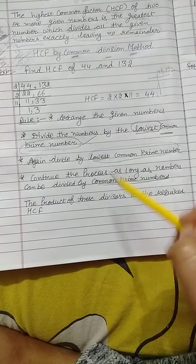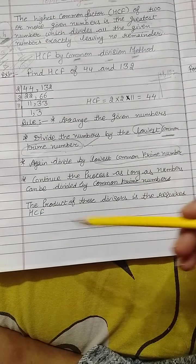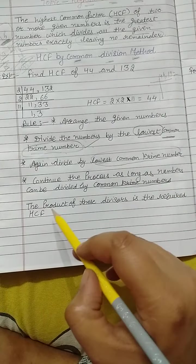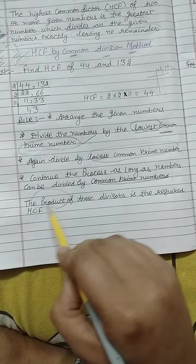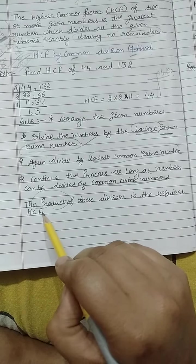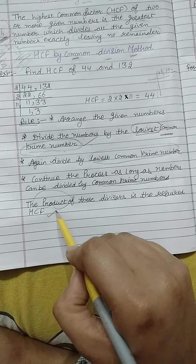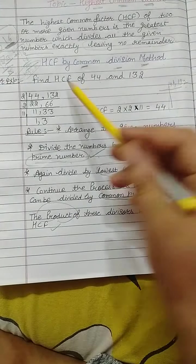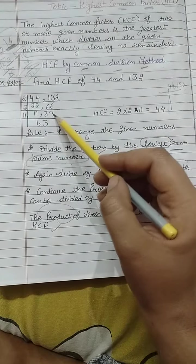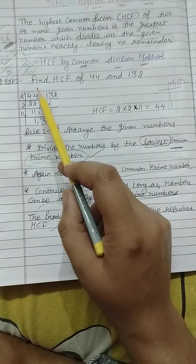You have to continue this process as long as the numbers can be divided by the common prime number. And the product of all these divisors is called the required HCF. So according to that rule, we will solve this question.